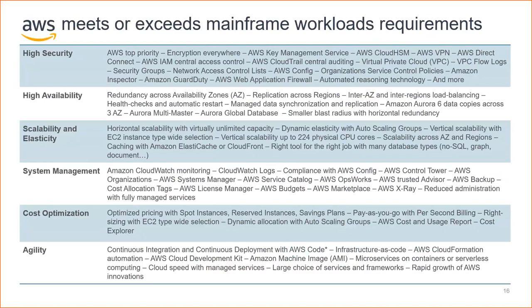A frequently asked customer question is: what about the quality of service for my enterprise data and applications? Mainframe systems often have stringent non-functional requirements, and when modernizing to AWS, we make sure we meet or exceed these requirements. AWS offers numerous capabilities to execute securely and reliably enterprise applications. The AWS Well-Architected Framework has been developed to help cloud architects build secure, high-performing, and resilient infrastructure. It's based on five pillars: operational excellence, security, reliability, performance efficiency, and cost optimization. This framework provides a consistent approach for customers and partners to evaluate their architectures and implement designs that will scale over time.